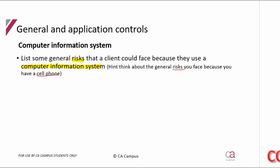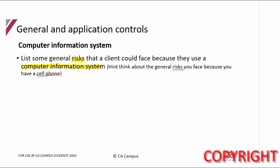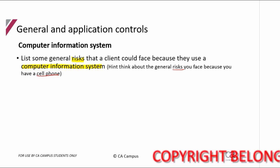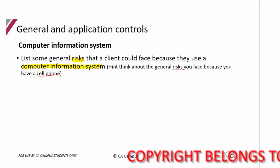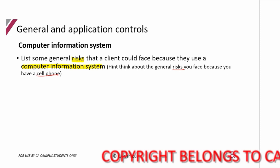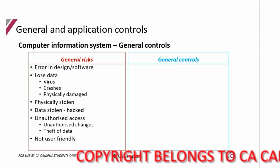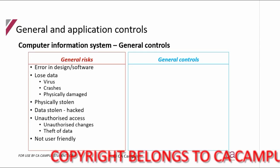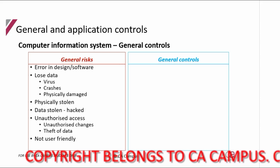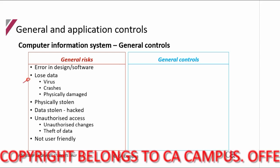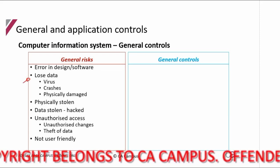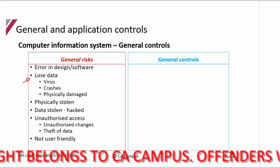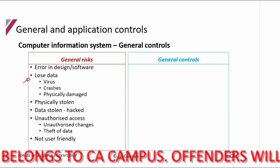I asked you for some risks that a client faces because of a computer information system, and asked you to think about your cell phone and the risks you face because you have one. The obvious risks I would have expected you to come up with are things like: you could lose what's on your cell phone — lose the data, your photos, your messages.